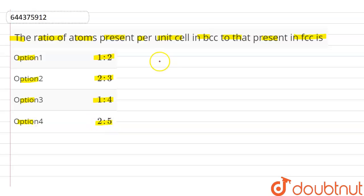Now first, let's discuss BCC. In BCC, the effective number of atoms per unit cell, that is Z, is equal to 2.